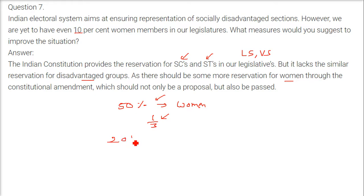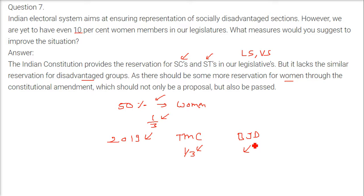Women constitute almost 50% of India's population, so at least one-third of seats should be reserved for women. In the 2019 general elections, TMC and Biju Janata Dal gave tickets to one-third women candidates, paving a path and showing the direction. If these national parties can give one-third seats to women candidates, why can't we have one-third representation of women in legislatures when they are 50% of the population?